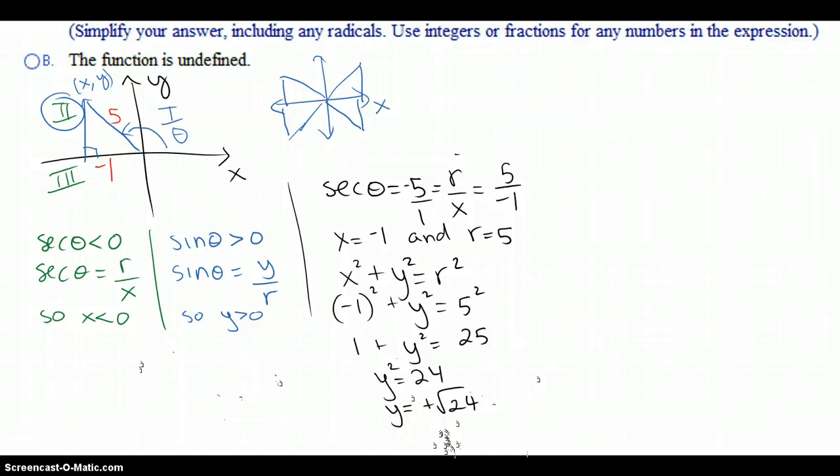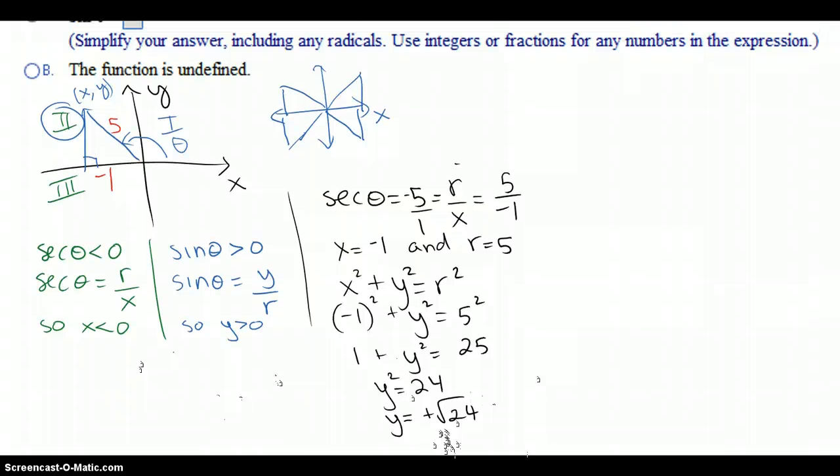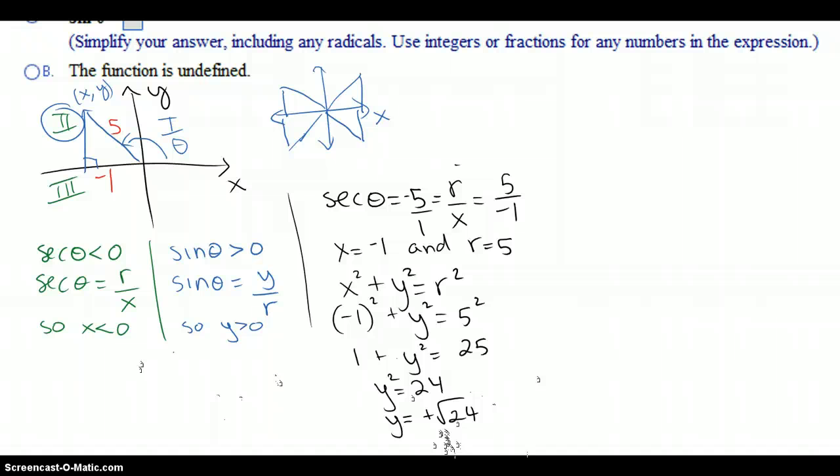One thing I need to warn you about is when you're plugging in the answers, notice how it says to simplify your answer, including any radicals. This is where everybody gets tripped up the most on this problem because they'll write the answer in terms of square root of 24. Sine of theta equals y over r, which is square root of 24 over 5. They think that they should be right. They're correct, but the answer is not simplified.